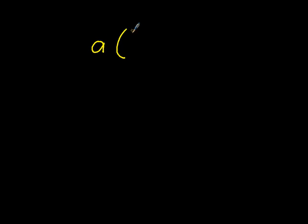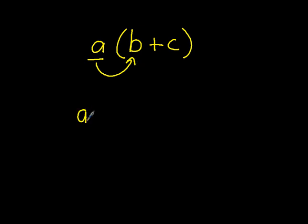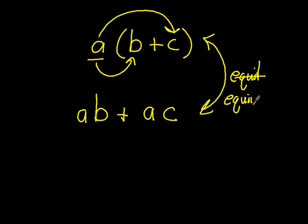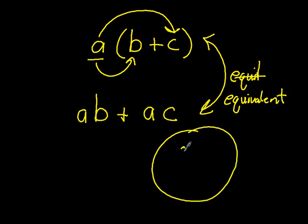In summary, when you have a times the sum of b plus c, you multiply a groups times the sum of b plus c. Using the distributive property, you multiply a times b to get ab, plus a times c to get ac. Both expressions are equivalent. You did a great job today — please complete your exit ticket and bring it to me when you are done. Thank you and have a great day.